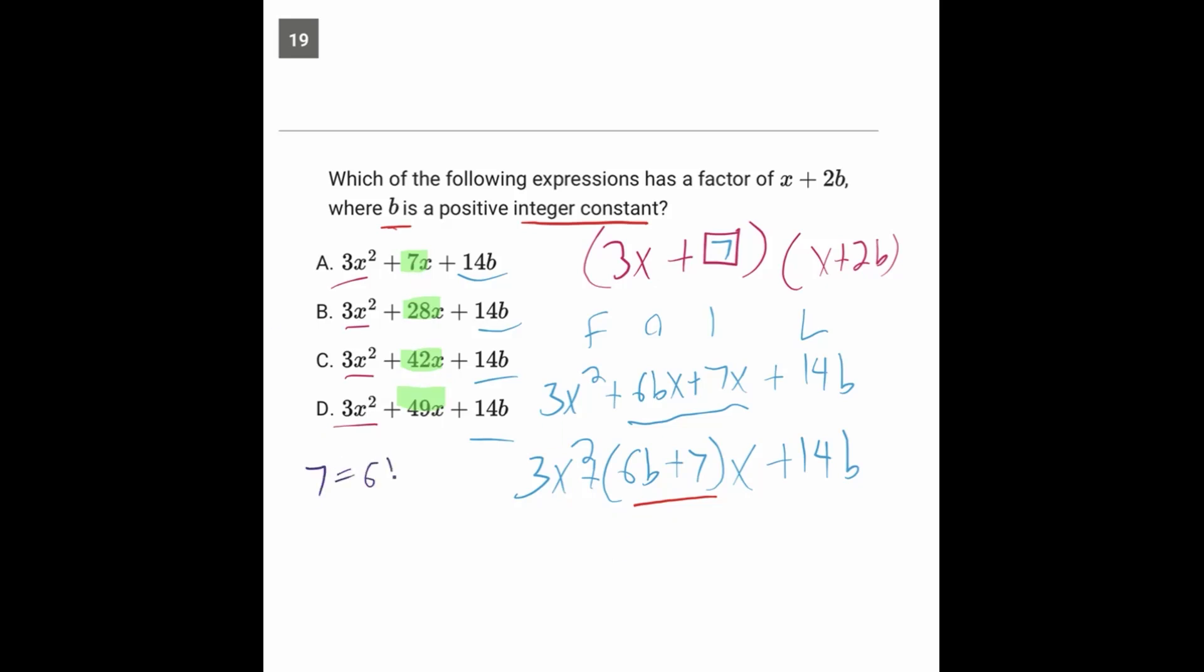So we can go off to the side and we can say, well, is 7 equal to that? Is 28 equal to that? And so on. 42... Now remember, for it to work out, b would have to work out as an integer. And the one that ends up working is this one.